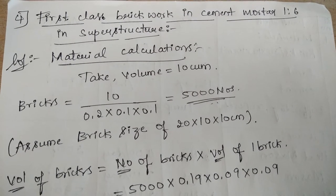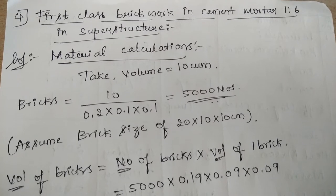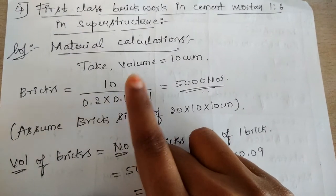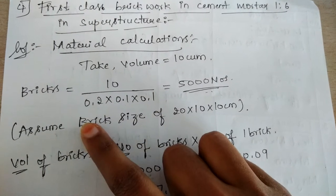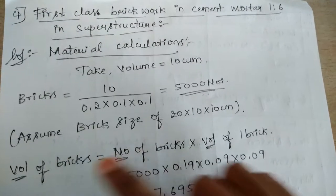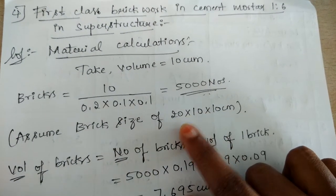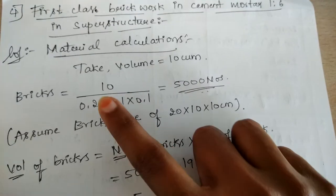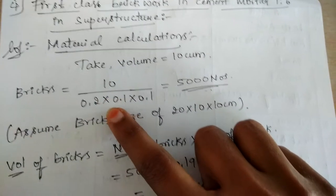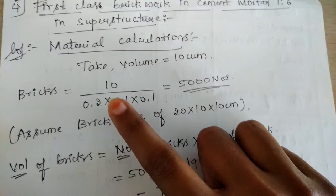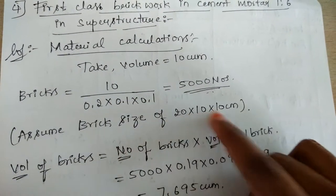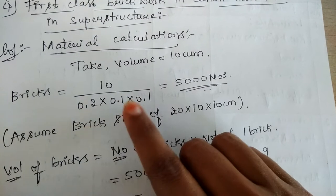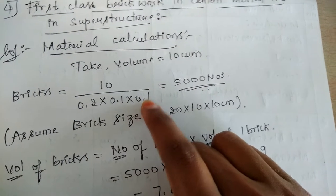So now we have to find the quantity of bricks. The quantity of bricks will be found out by dividing the volume by the size of the brick. Let us assume the standard size of the brick as 20 by 10 by 10 centimeter. Writing this value in terms of meter, we divide all three values by 100, giving us 0.2 by 0.1 by 0.1.